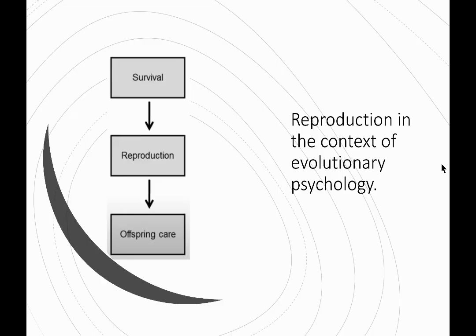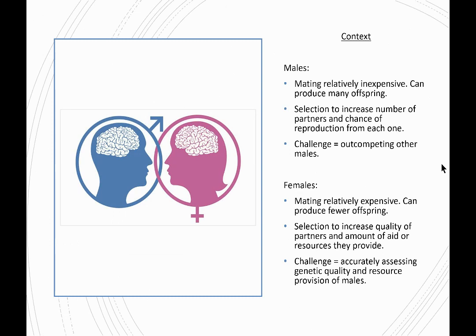Let's think about reproduction in the context of evolutionary psychology. For males, mating is relatively inexpensive — males can produce many offspring. Selection to increase the number of partners and the chance of reproduction from each one is what we would expect. The challenge for males is out-competing other males for those privileges. For females, mating is relatively expensive — females can produce fewer offspring. We would expect selection to increase the quality of partners and the amount of aid or resources those partners can provide. The challenge is accurately assessing the genetic quality and resource provision of males.